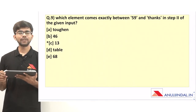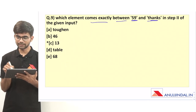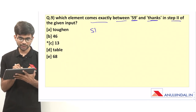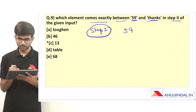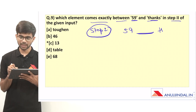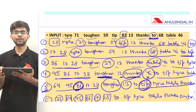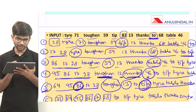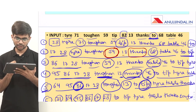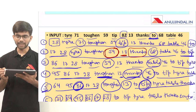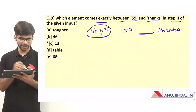Question 9: Which element comes exactly between 59 and 'thanks' in step 2? In step 2, 59 and 'thanks' appear with the element 13 lying between them. So the correct option is option C, 13.